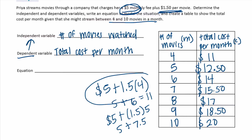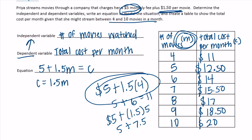Here is our equation. Each time we did 5 plus $1.50 times the number of movies M, equals the total cost per month. You could also write it as C equals $1.50M plus 5. As long as you have this same equation in some form — you can write 1.50M plus 5, or 5 plus 1.50M — as long as it looks similar to that, you have a correct equation.